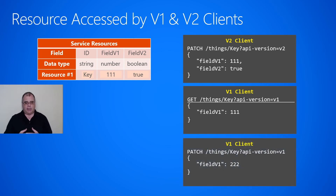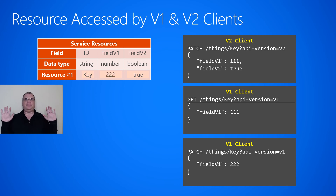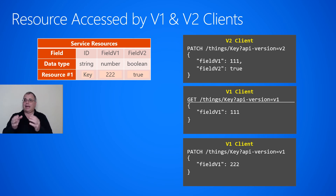Now let's say a v1 client does a PATCH operation to modify this resource, setting the v1 field to 222. The v1 client doesn't know about field v2, because it was introduced in version 2, so it couldn't possibly include field v2 in the payload. When it makes this request, it modifies the v1 value to 222 but leaves field v2 unchanged — it remains true. So the v1 client is able to manipulate the properties it knows about and leave the properties it doesn't know about untouched. There's no data corruption and no data loss.